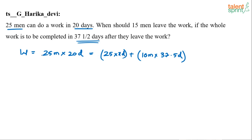25 men can do work in 20 days. So number of men into number of days. 25 men started the work. They work for X days. After that 15 men left. 15 men leaving the work meaning what? 25 minus 15 is 10. 10 men are left out. And they will work for 37.5 days. If the whole work is completed in 37 and a half days after they leave the work.